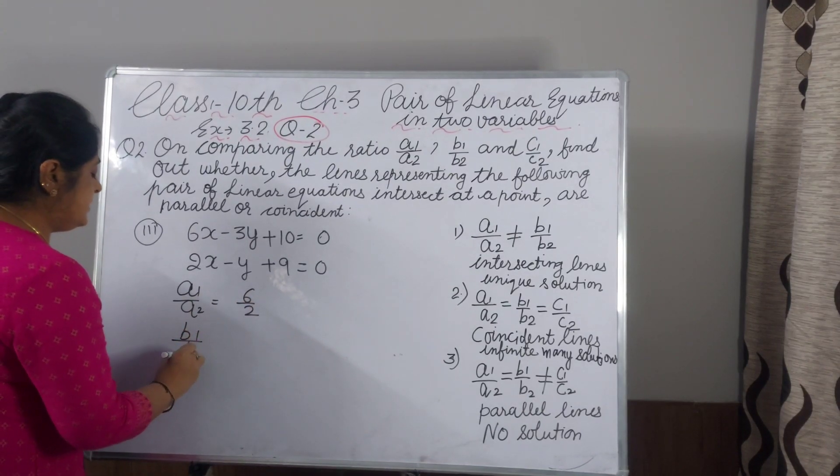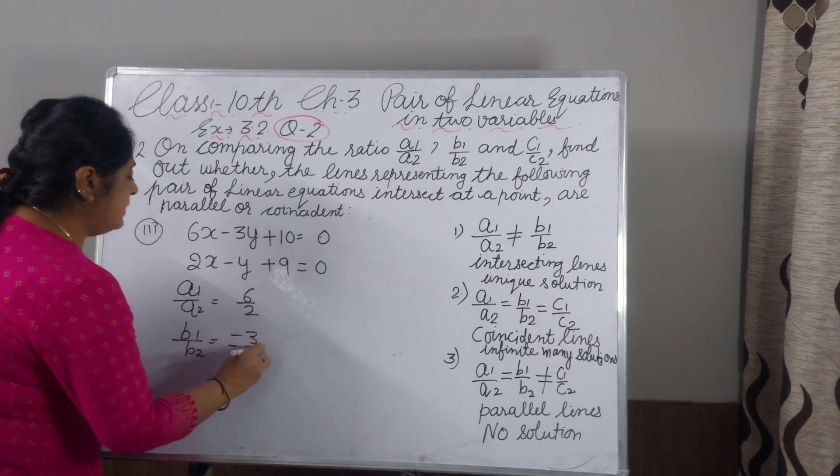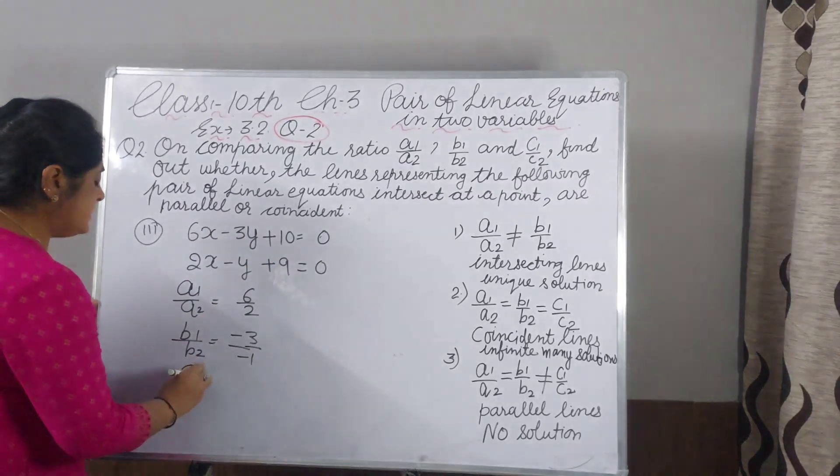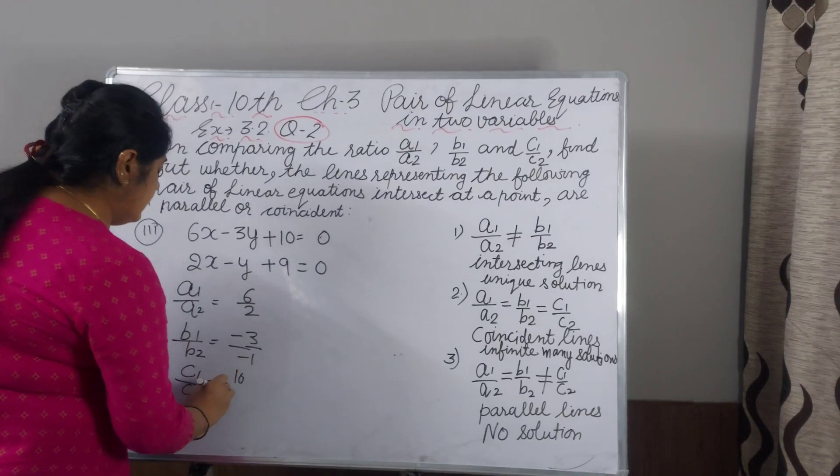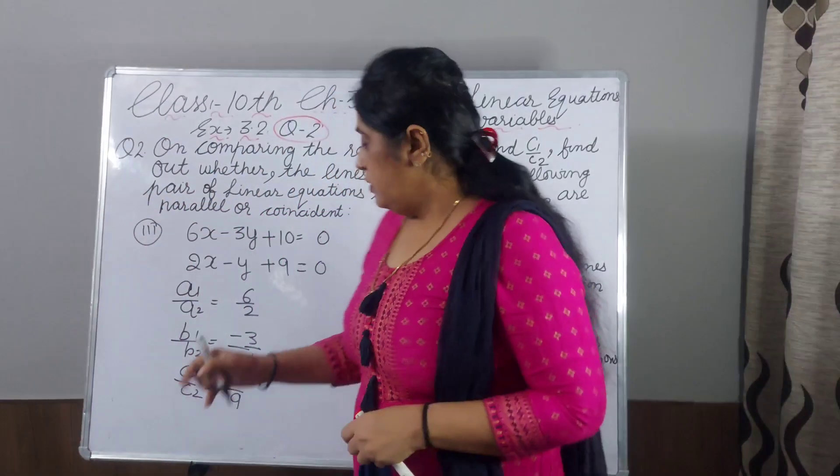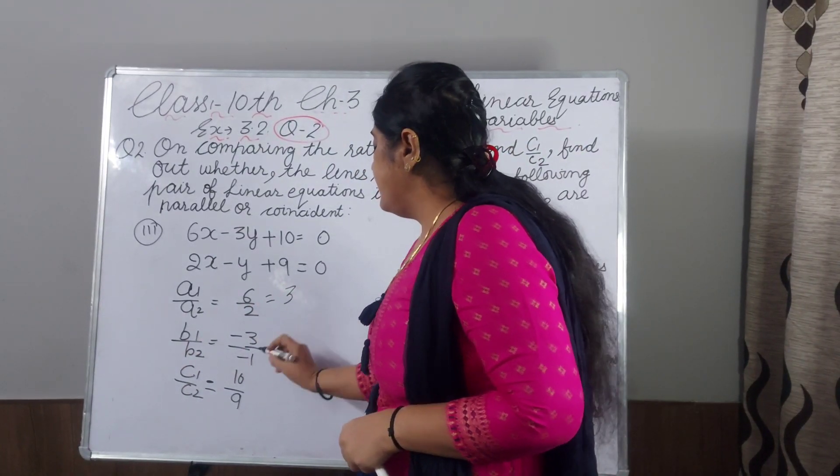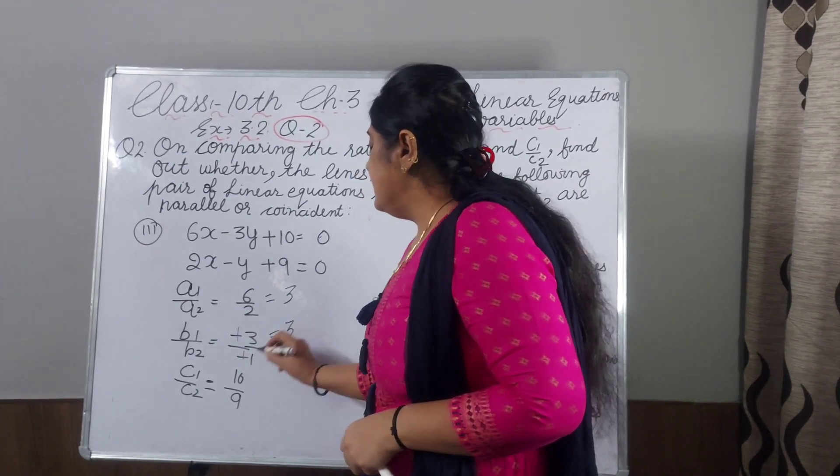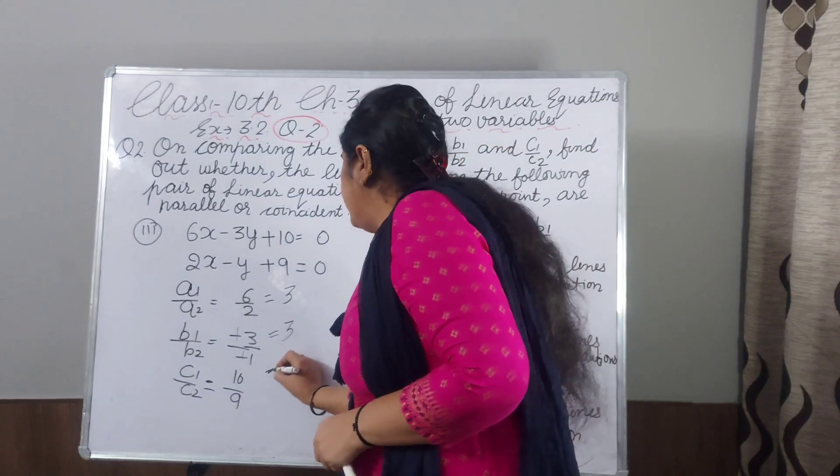B1 by B2, minus 3 by minus 1. Why coefficient is not there? You can write minus 1. Now C1 by C2, 10 by 9. 6 and 2, you can reduce the term. 2, 3s are 6, you will get 3. This minus and minus will cancel, you will get 3. 10 and 9 has no common factor, you will get 10 by 9.